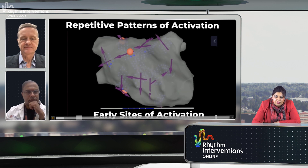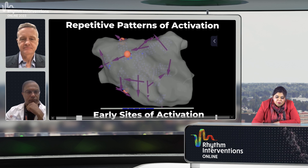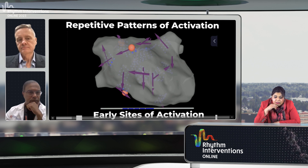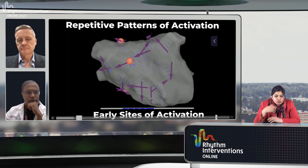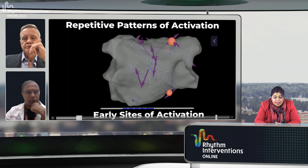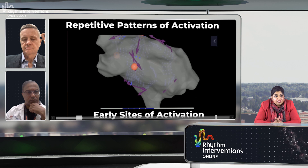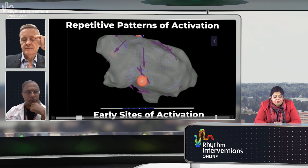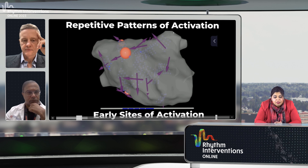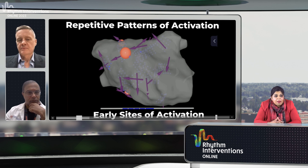Here we're starting to see the Star Map — looking at early sites of activation and the patterns of activation. We're highlighting some of these areas: along the anterior septum along the right antrum, and in the anterior LA wall, you can see the repetitive patterns — two that are crisscrossing each other. We're seeing early sites of activation along the right superior anterior antrum. Coming into the posterior wall and along the posterior roof, especially along the right superior pulmonary vein, we're seeing early sites of activation again, with repetitive patterns emerging in both directions.